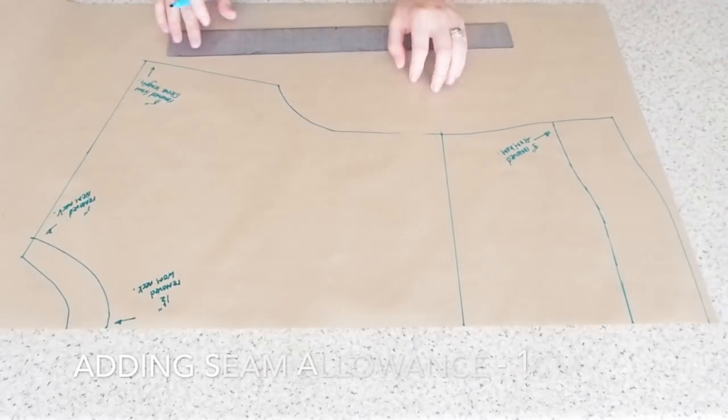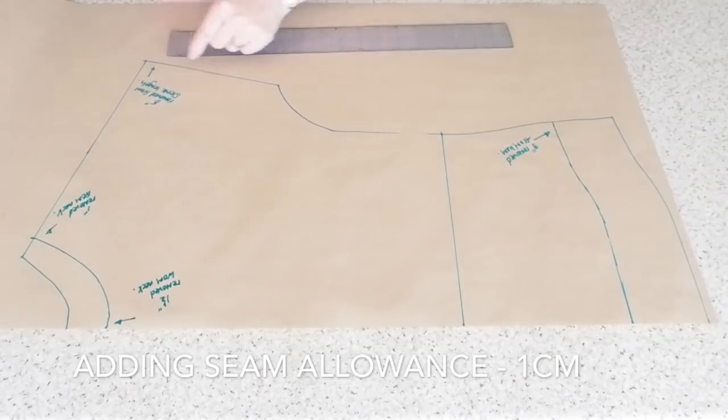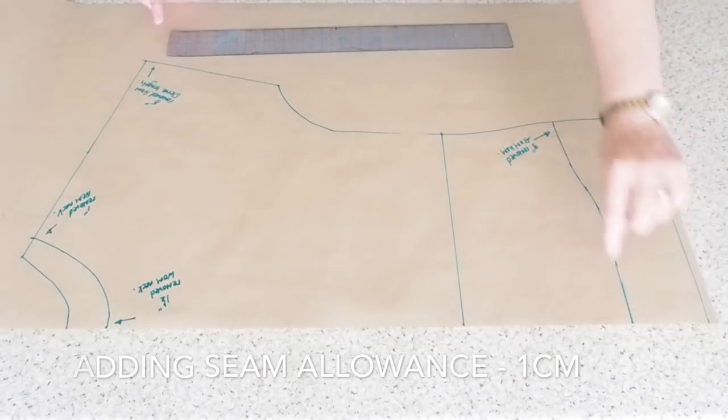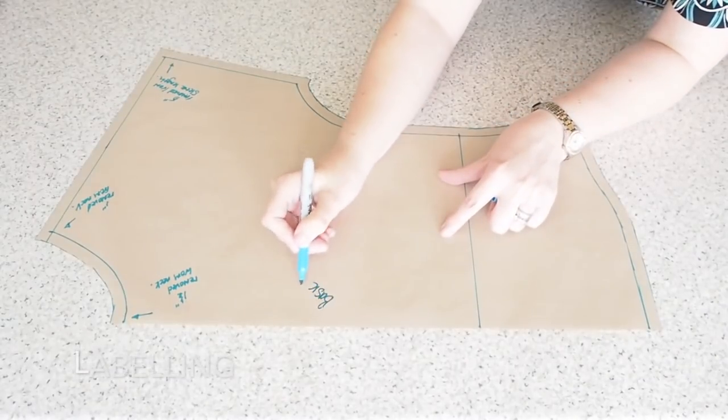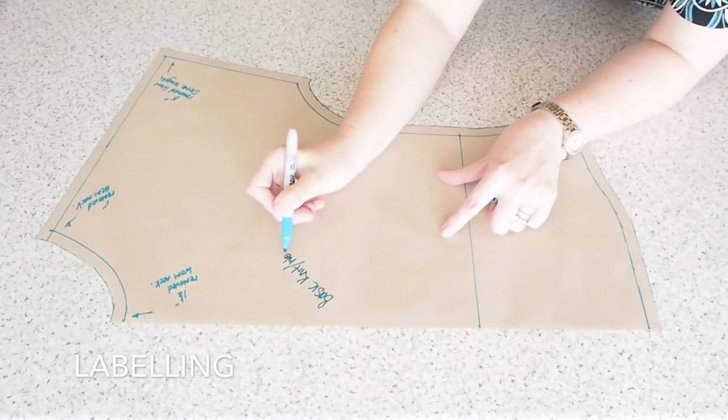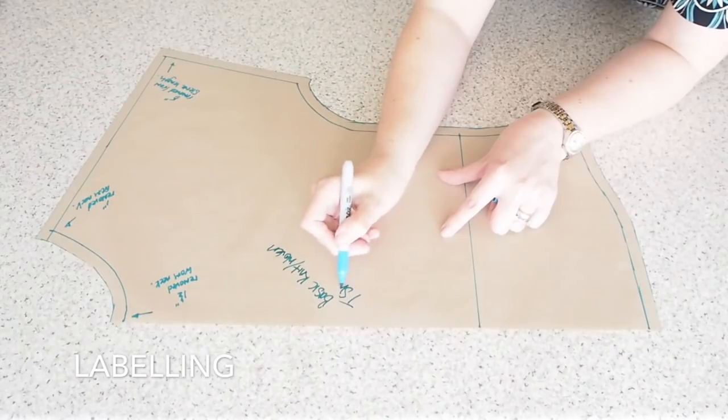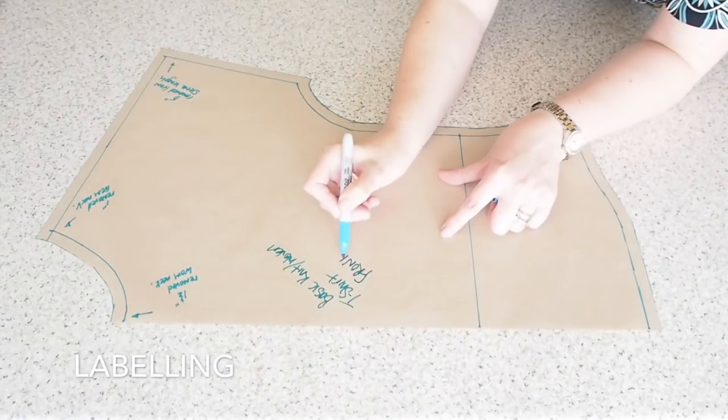And now just to add seam allowance the whole way around and to label. So this is my front. I shall cut one on the fold.